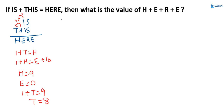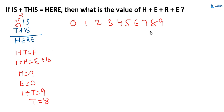Now, the already-used values are zero, one, two, three, four, five, six, seven, eight, and nine. We know that T is allocated eight, H is allocated nine, and E is allocated zero.